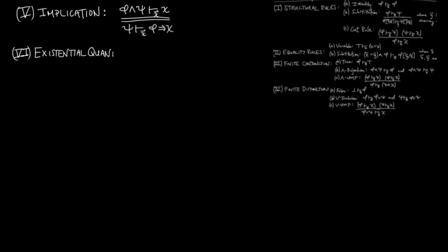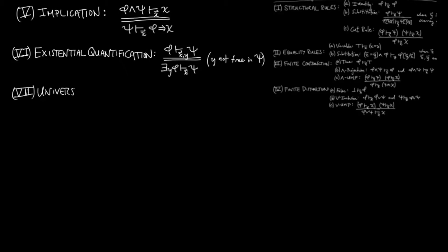Sixth, existential quantification: 'phi entails psi in the context of x and y' is equivalent to 'there exists y, phi entails psi in the context of x,' where we assume that y is not free in psi. Seventh, universal quantification: 'phi entails psi in the context of x and y' is equivalent to 'phi entails for all y, psi in the context of x,' where y is not free in phi.